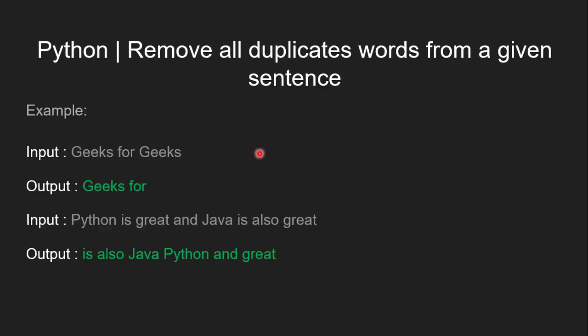Let's have a basic understanding from the examples. In the first example, we have taken the input as Geeks for Geeks. The output should be Geeks for, as Geeks is a duplicate word among all the words.